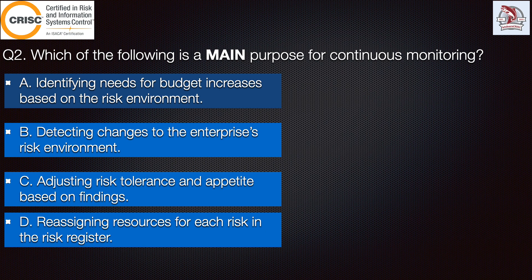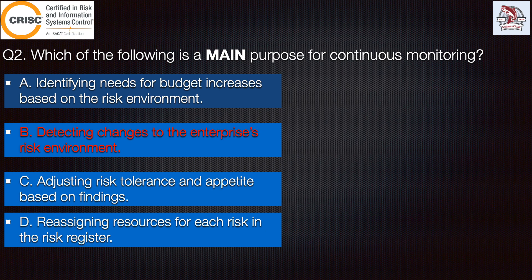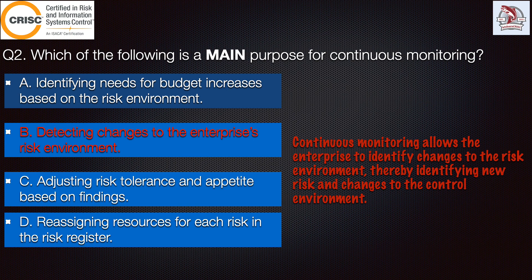The correct answer is Option B: detecting changes to the enterprise risk environment. Continuous monitoring allows the enterprise to identify changes to the risk environment, thereby identifying new risks and changes to the control environment.